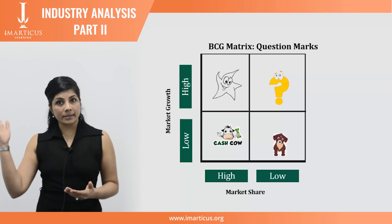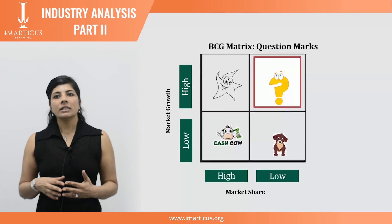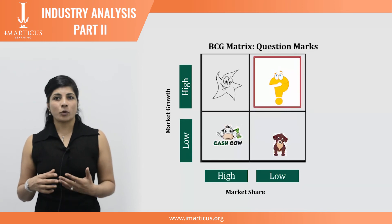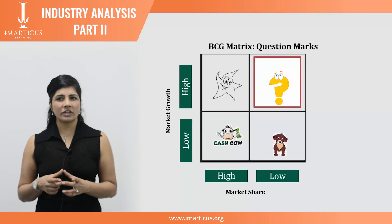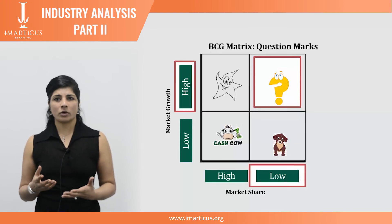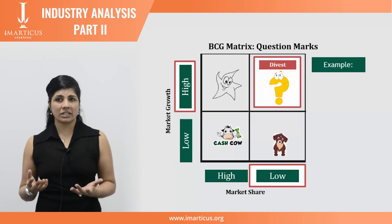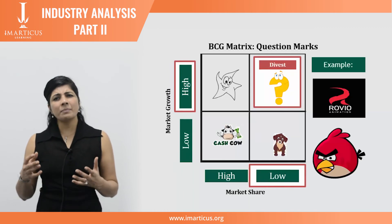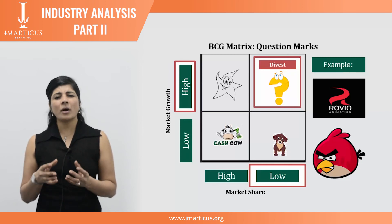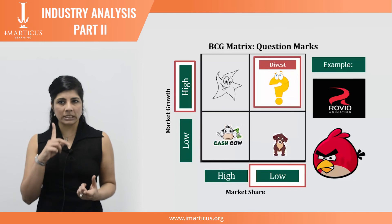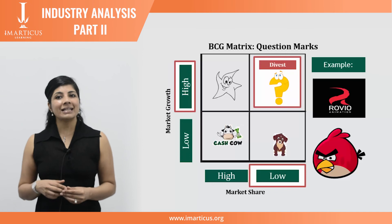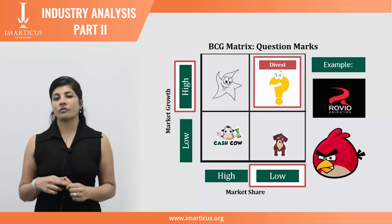Question marks, or problem children, are products in high growth markets with low market share. These products often require significant investment to push them into the star quadrant, and it's recommended to consider divesting such products. For example, Rovio, creators of the very successful Angry Birds game, developed many other games you may not have heard of. Computer games companies often develop hundreds of games before gaining one successful title, and it's not always easy to spot the future star — which can result in wasted funds.